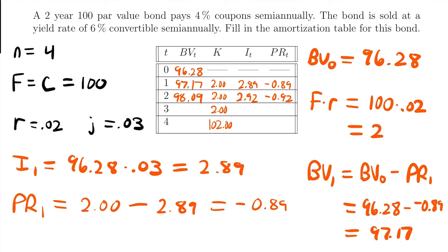For time 3: the interest accumulated is 0.03 times 98.09 equals $2.94. Subtracting the interest from the payment gives the principal: $2 minus $2.94 equals negative $0.94. Then subtracting this negative principal from the book value at time 2 — meaning we add $0.94 — gives us a book value at time 3 of $99.03.